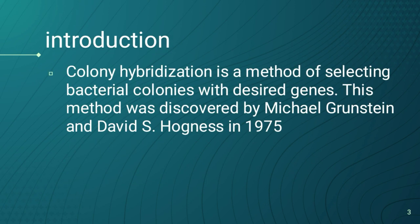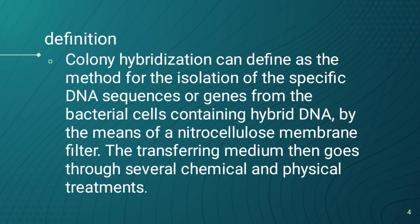Colony Hybridization is the method for selecting bacterial colonies with discrete genes. This method was discovered by Michael Greenstein and David Ockness. It is defined as the method for isolation of specific DNA sequences or genes from bacterial cells containing a hybrid DNA by means of a nitrocellulose membrane filter, followed by several chemical and physical treatments.